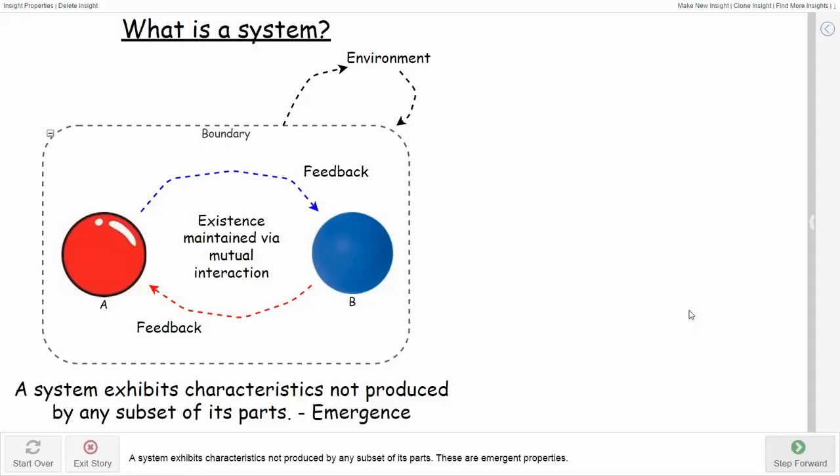So a system exhibits characteristics not produced by any subset of its parts, and it's called emergence. Is it confusing already? I would expect so.